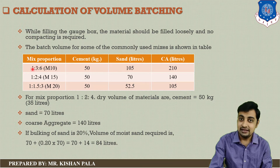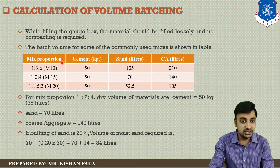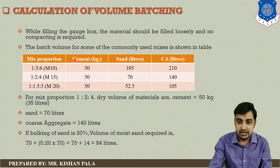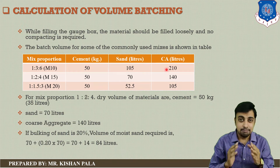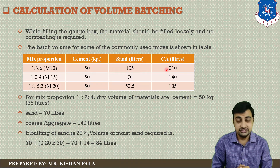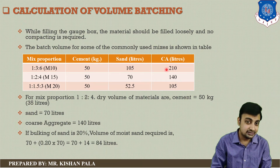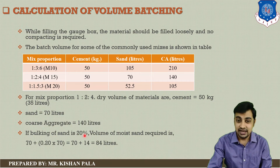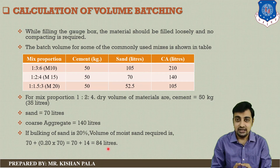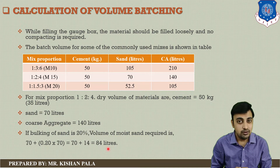For M10 grade: cement is 35 × 1 = 35 liters or 50 kg; fine aggregate is 35 × 3 = 105 liters; coarse aggregate is 35 × 6 = 210 liters. In case bulking correction is required, we have to correct the fine aggregate volume. For example with 1:2:4 mix, if bulking of sand occurs in the concrete mix, bulking correction should be taken while doing volume batching. This is all about the calculation of volume batching.